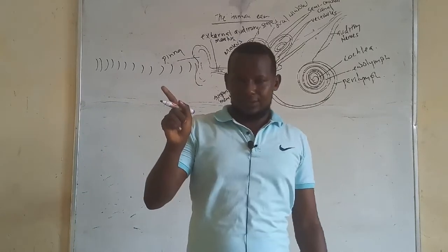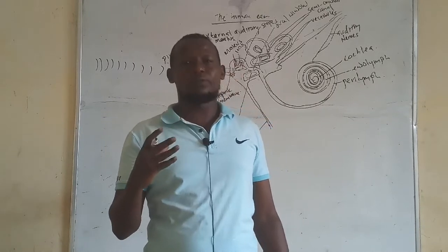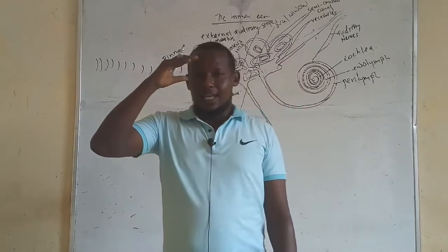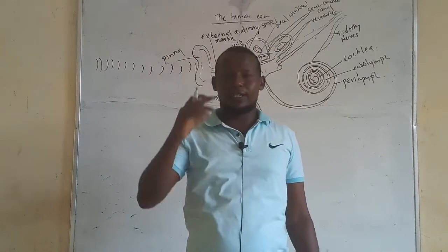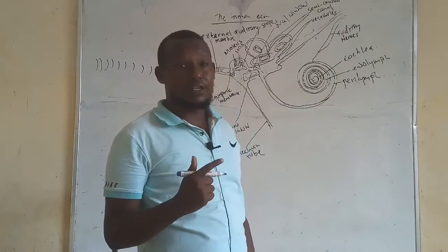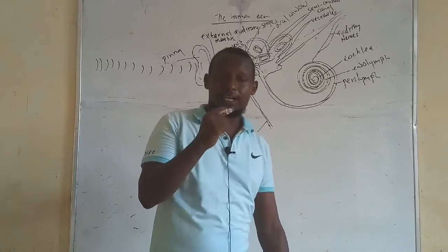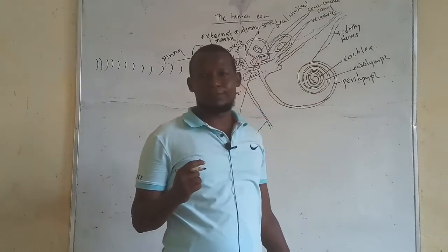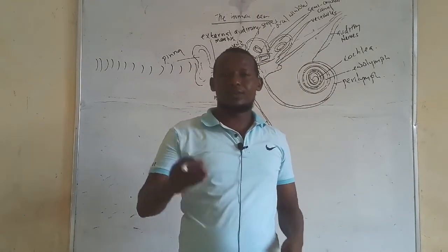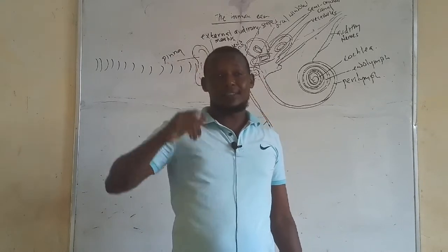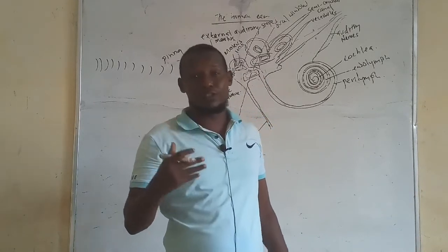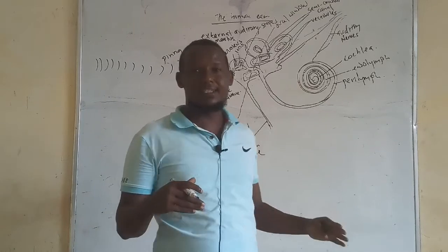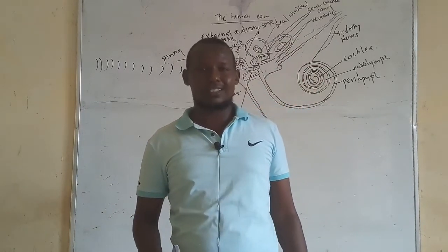The nerve impulses are relayed to the brain — specifically the cerebrum, a structure found in the forebrain responsible for receiving impulses related to hearing, sight, and taste. The auditory nerve carries the impulse to the cerebrum for interpretation. Once the sound is interpreted, it is perceived, and the result of the interpretation is relayed to the effectors as a response.